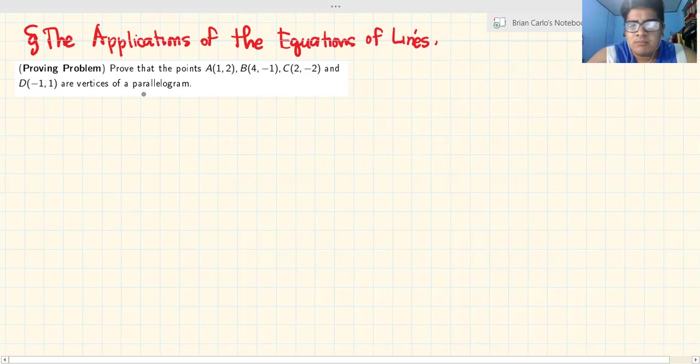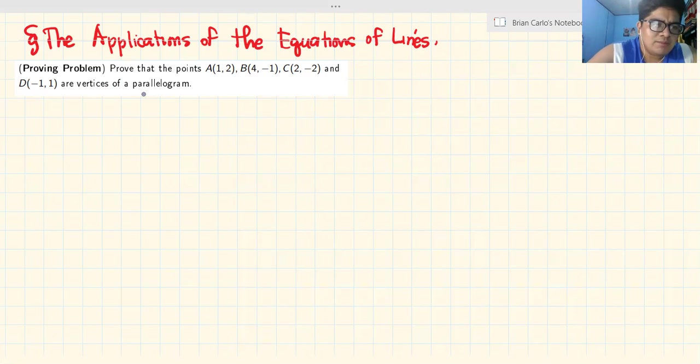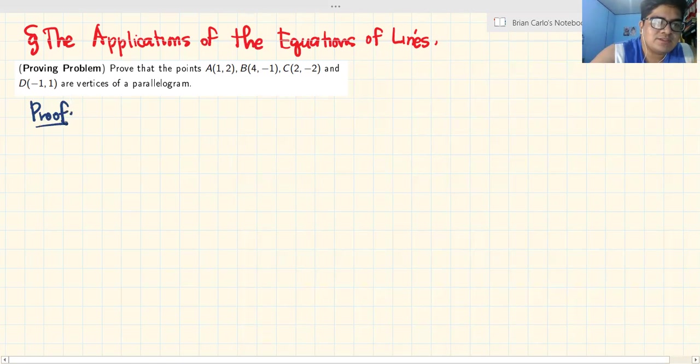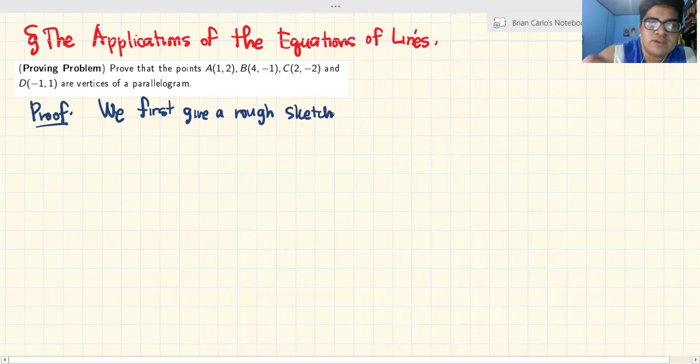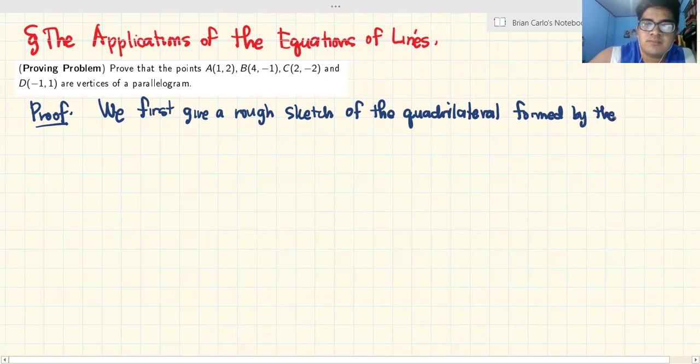It seems like a very complicated problem but you're gonna see that it is quite basic if you know what you're doing. Now, paano natin gawin ito? Let's have a proof. Kasi kapag sinabi proving problem, kailangan ang sagot mo, hindi solution. It is what we call a proof. We first give a rough sketch of the quadrilateral formed by the points A, B, C, and D.